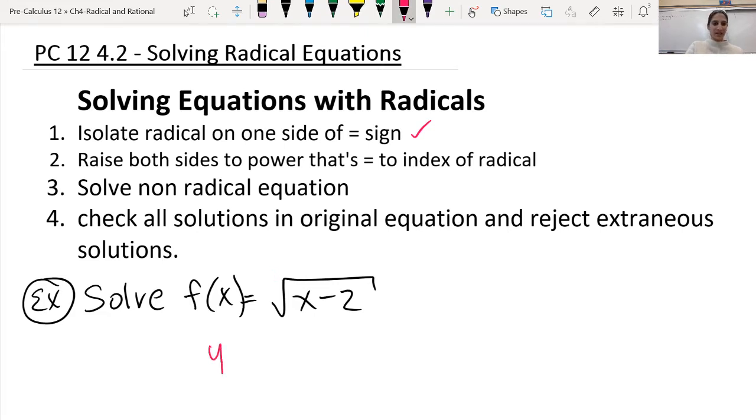So all of that's saying is, I'm going to rewrite it this way, y equals root x minus 2. So it's just telling us to square both sides in order to be able to get rid of it.